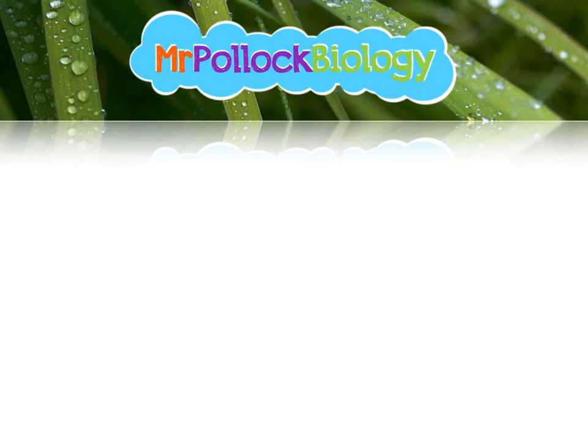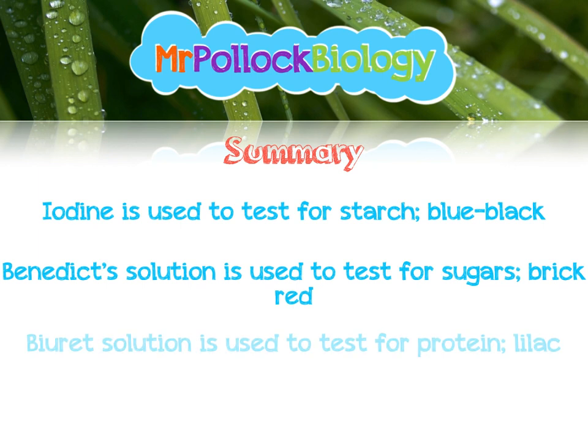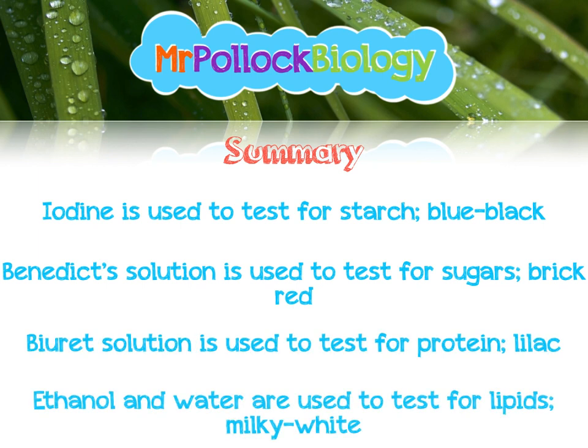And that's it — that's all you need to know. To summarise: iodine is used to test for starch, you're looking for a blue-black colour. Benedict's solution is used to test for sugars, you're looking for a brick red colour. Biuret solution is used to test for protein, you're looking for a lilac colour. And ethanol and water are used to test for lipids, you're looking for a milky white colour. I hope that's been helpful, guys. Please like, comment and subscribe.